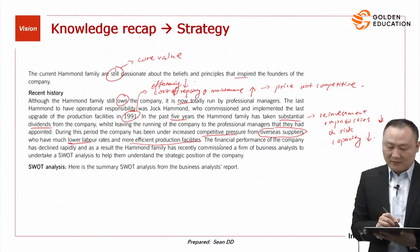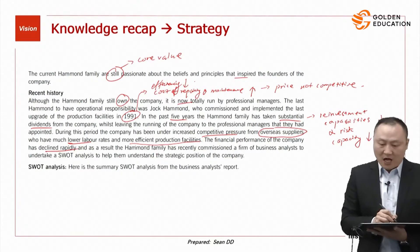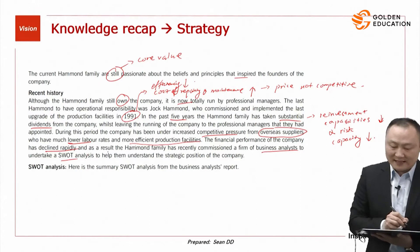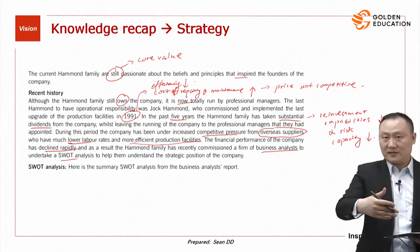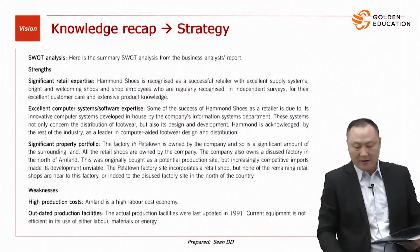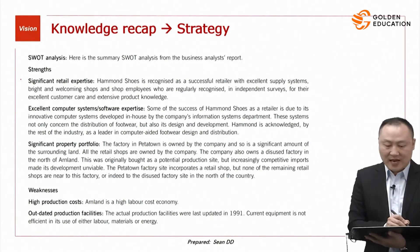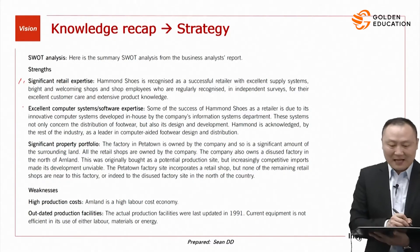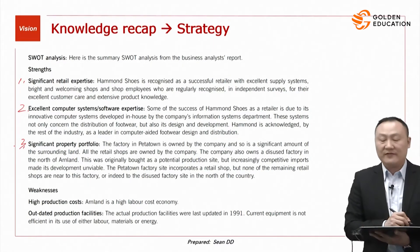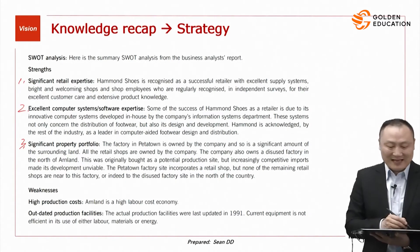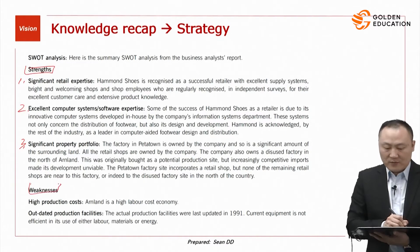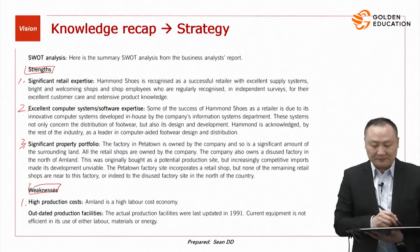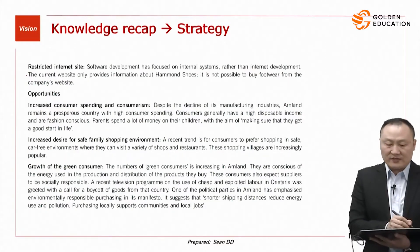The financial performance of the company has declined rapidly. As a result, the Harman family commissioned a firm of business analysts — that's you — to undertake a SWOT analysis to help them understand the strategic position of the company. The analysis shows the following strengths: significant retail expertise, excellent computer system and software expertise, and a significant property portfolio because they own rather than lease their properties.